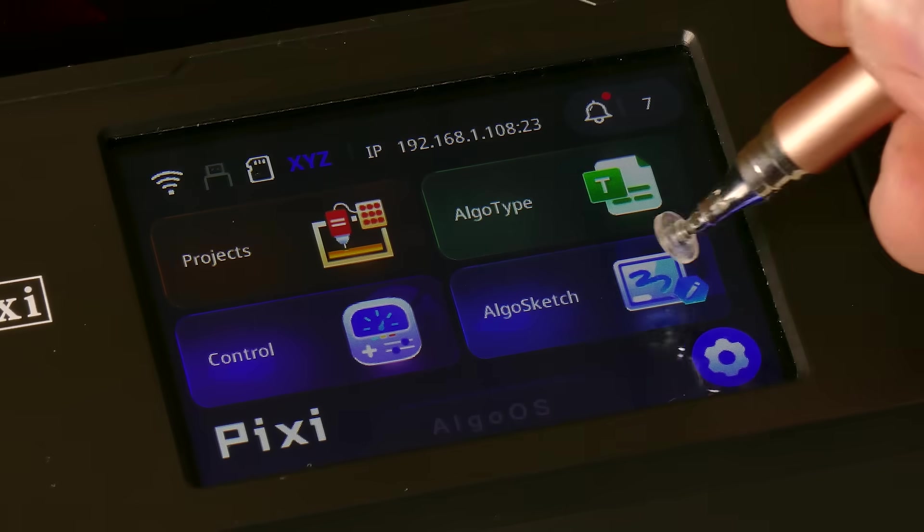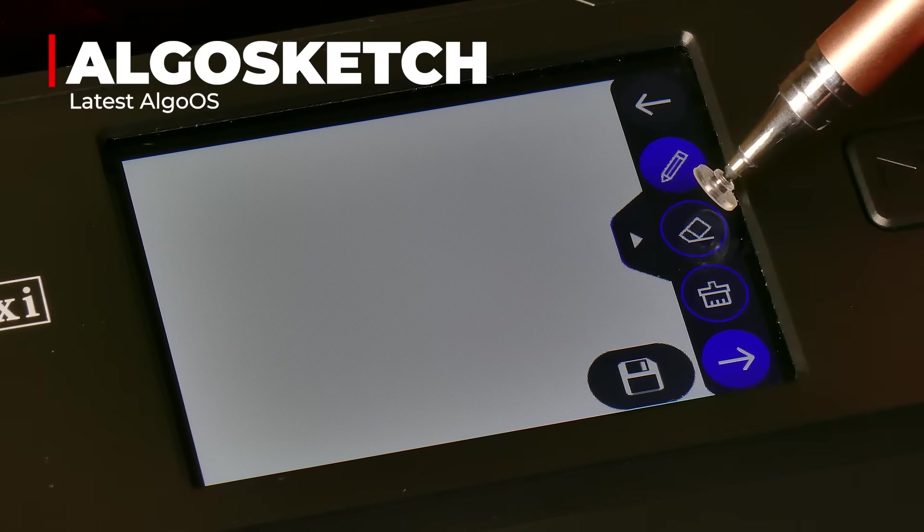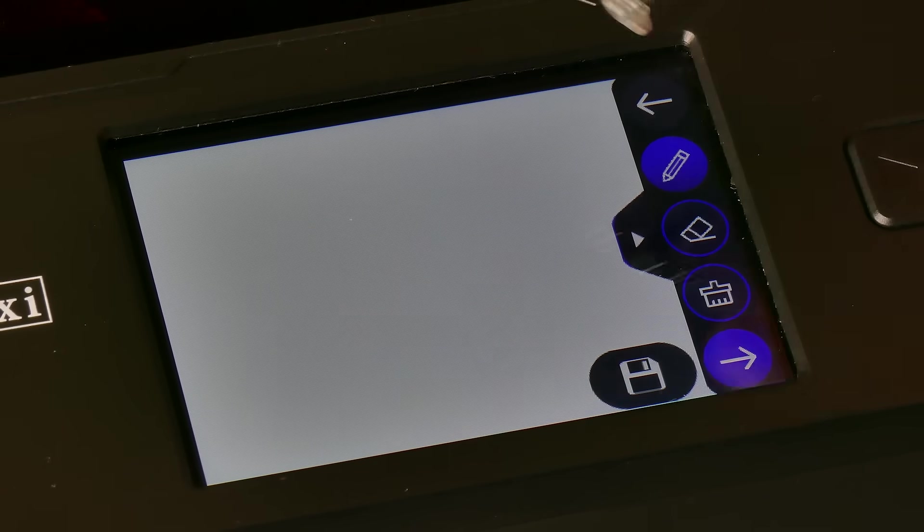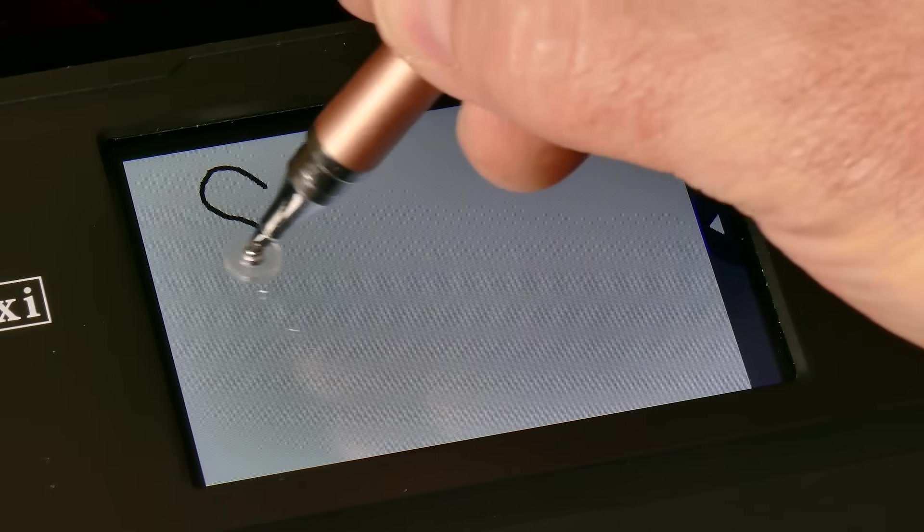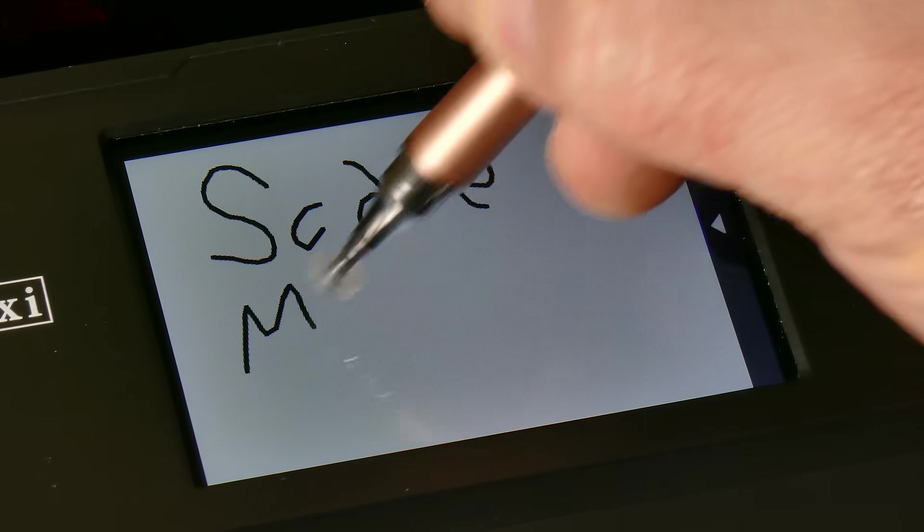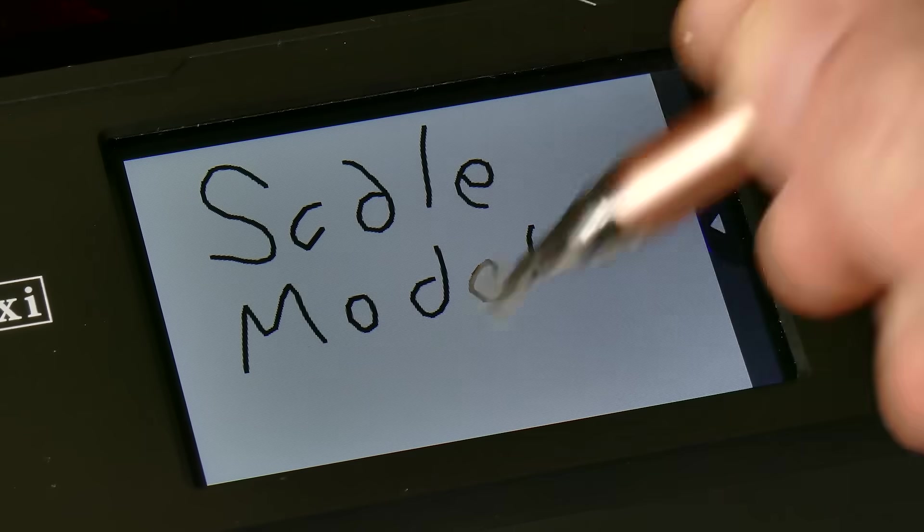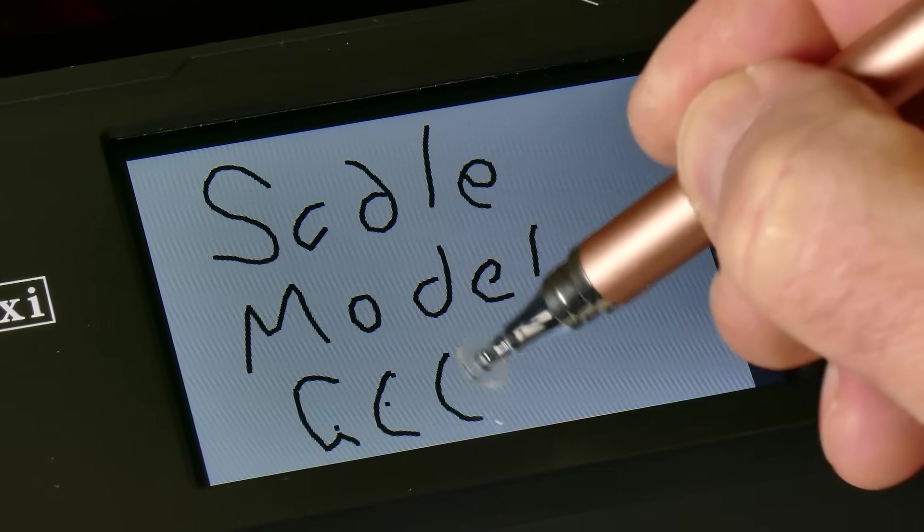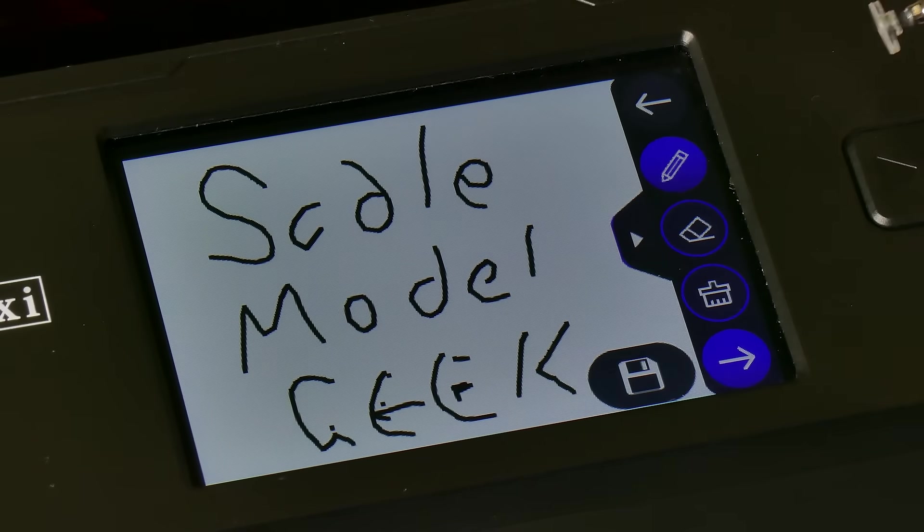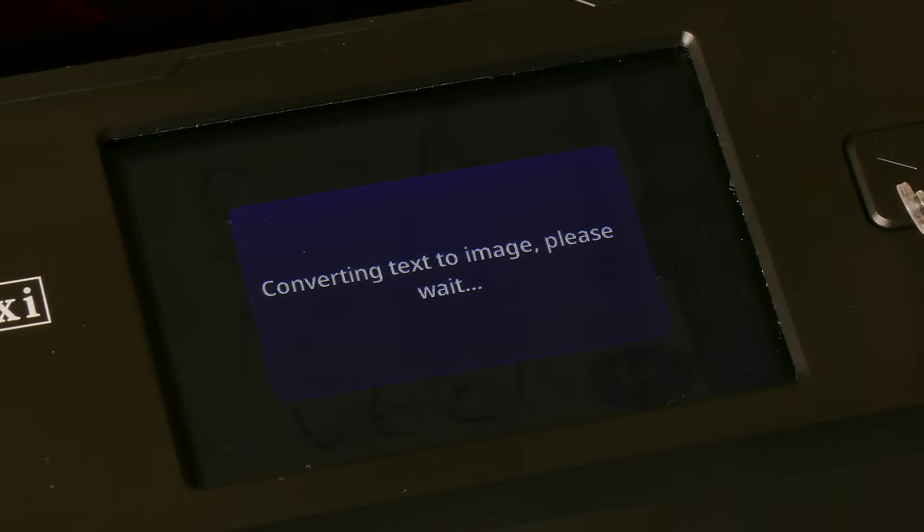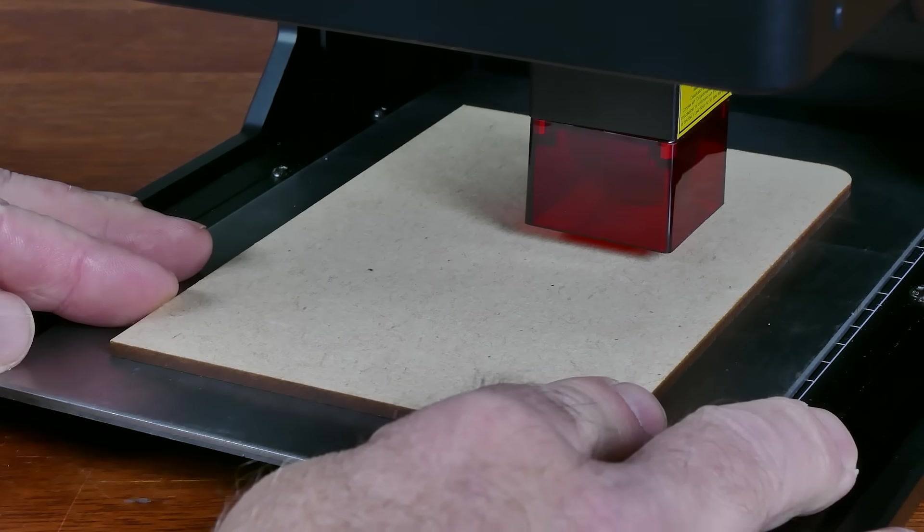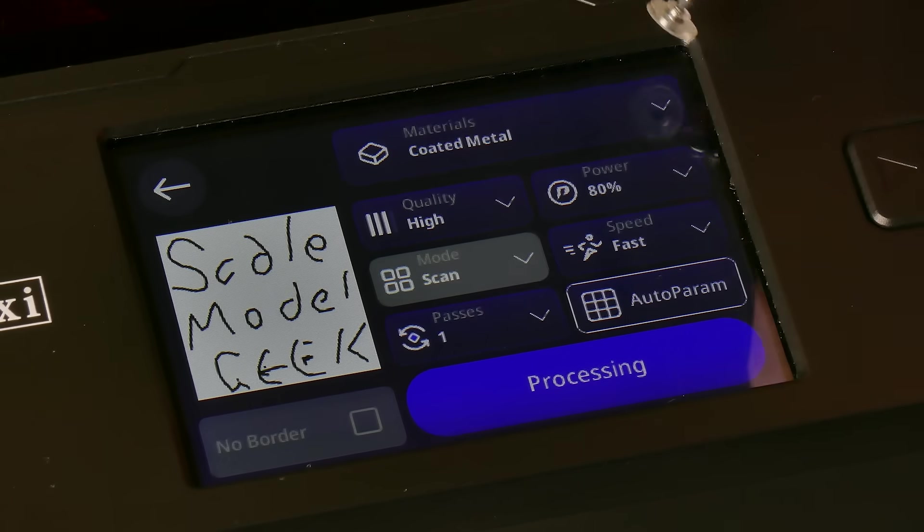Another feature that the Pixie has is what's called the Algo Sketch. Using the stylus, you can create your own little drawings. The reality of this little section is the drawings have to be really simple, I think. I suck at sketching, so this isn't an area that really does not show my talent at all. I tried the most basic thing I could come up with, and that was of course Scale Model Geek.